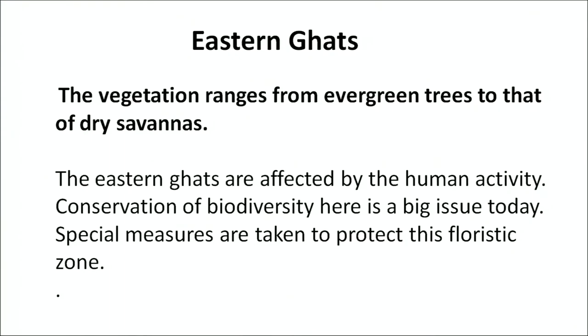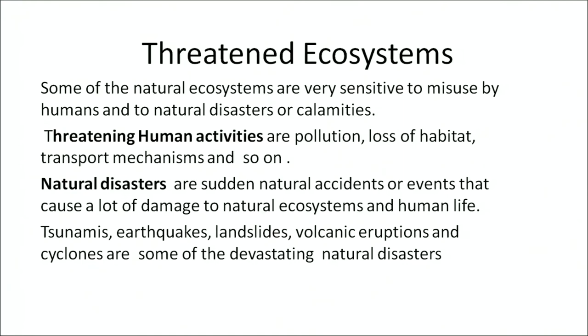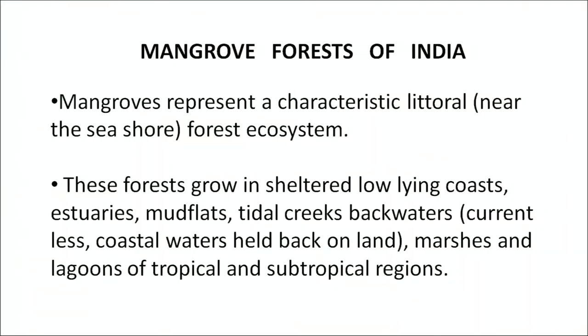Mangrove ecosystems are very interesting natural ecosystems of India. They are sensitive to misuse by human activity and natural disasters. Human activities that threaten these ecosystems include pollution, loss of habitat and transport mechanisms. Natural disasters that affect them include sudden natural events that cause damage to both the ecosystems and human life — tsunamis, earthquakes, landslides, volcanic eruptions and cyclones are some of the devastating natural disasters affecting mangrove ecosystems.